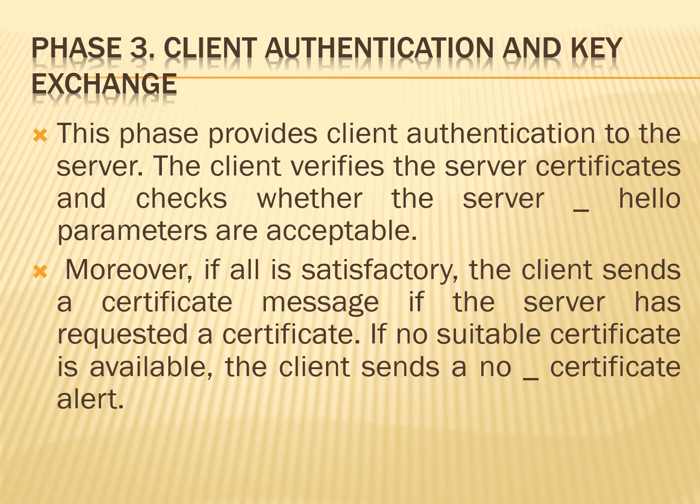A non-anonymous server can request a certificate from the client. The certificate request message includes two parameters: certificate type and certificate authorities. The certificate type indicates the public key algorithm, which can be RSA signature, DSS signature, RSA for fixed Diffie-Hellman, DSS for fixed Diffie-Hellman, RSA for ephemeral Diffie-Hellman, DSS for ephemeral Diffie-Hellman, and also Fortezza. The second parameter of the certificate request message is a list of the distinguished names of acceptable certificate authorities.